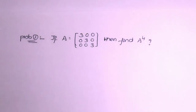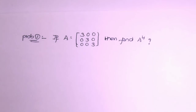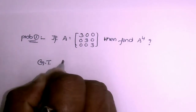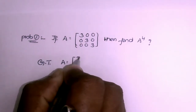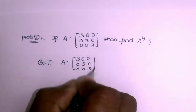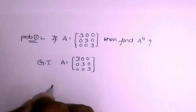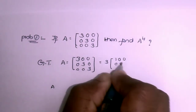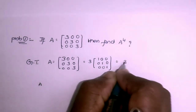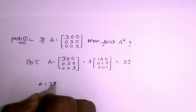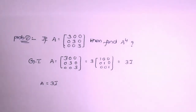The first question: if A equals 3 times the identity matrix (written as 30000300003), then find A to the power 4. First, I take the given matrix A = 30000300003. Taking 3 common, we get A = 3 times the identity matrix I. That is, A = 3I.